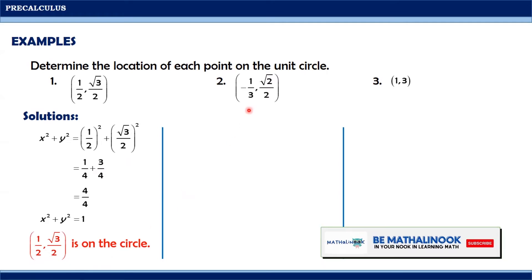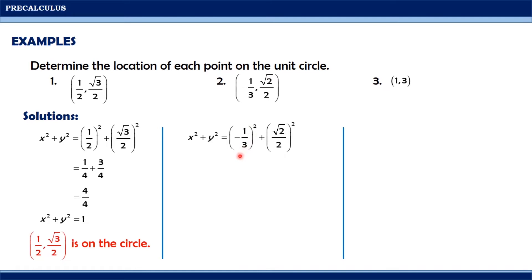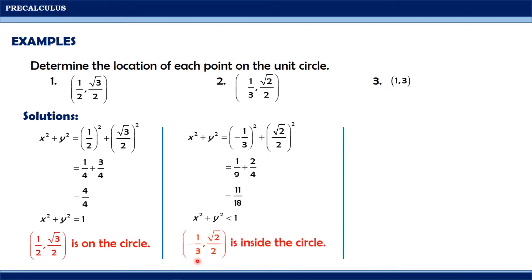Let us go to the second given: (-1/3, square root of 2 over 2). By substitution, we will have (-1/3) squared plus (square root of 2 over 2) squared. Simplifying each term, we will have 1/9 plus 2/4. Adding 1/9 plus 2/4 and expressing the answer in lowest terms, it gives us 11/18. Notice that the value 11/18 is less than 1. Since its value is less than 1, the point (-1/3, square root of 2 over 2) is inside the circle.